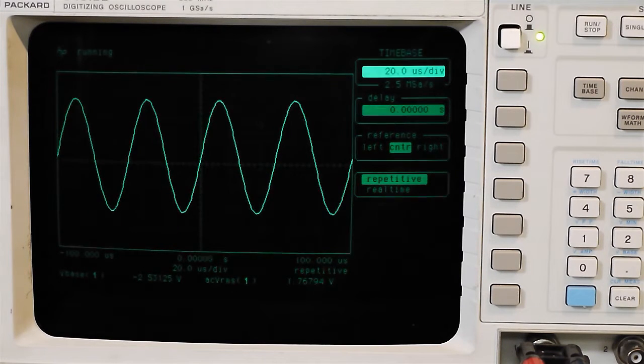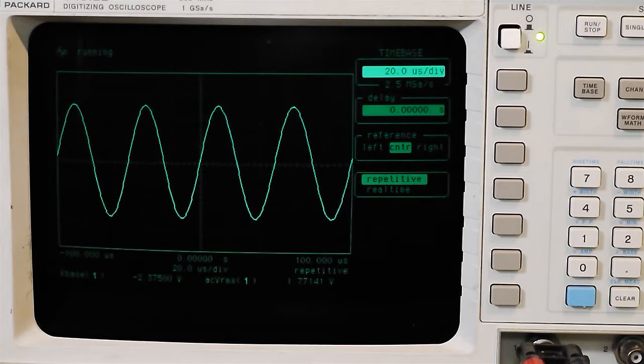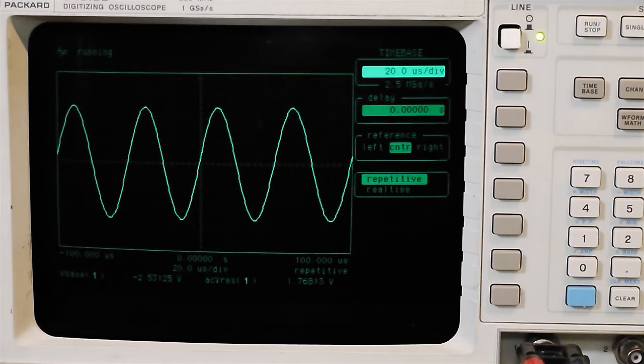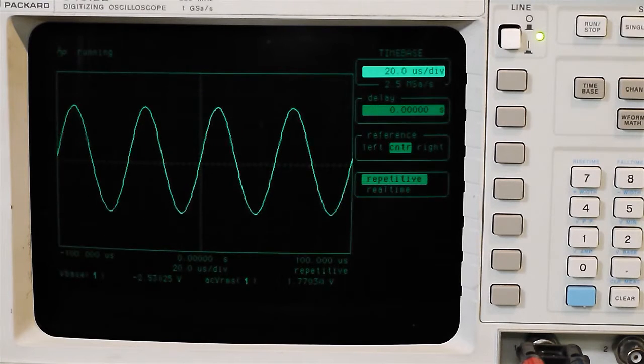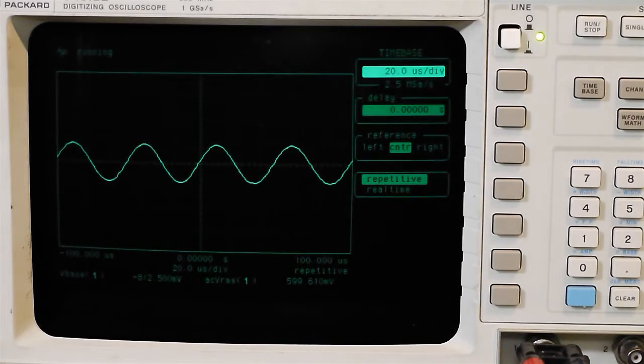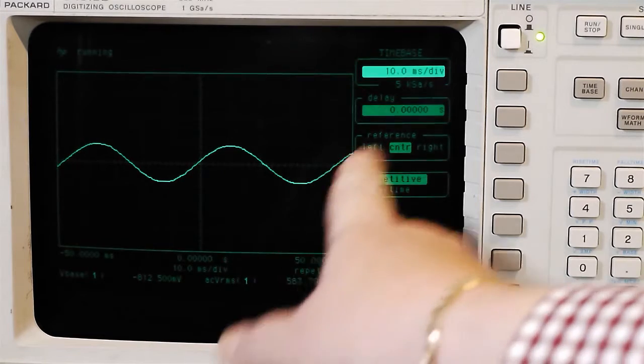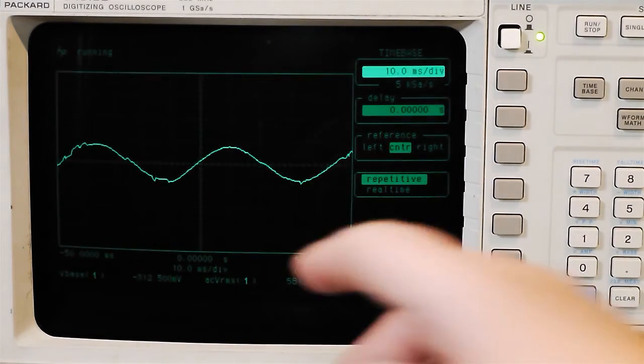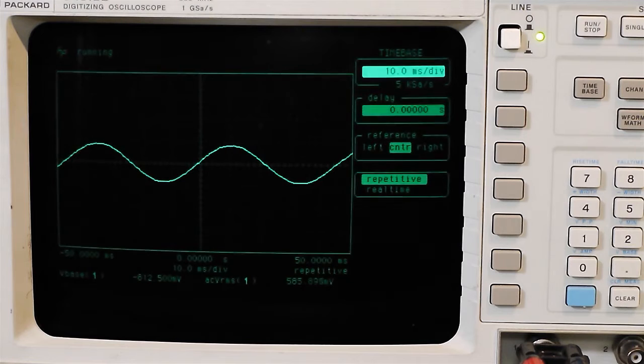A little bit of DC unsteadiness there, that's interesting. Don't know what's going on there. Maybe our DC servo is not quite keeping up, a bit of a worry. I've just changed the frequency to 20 Hertz and changed our time base to 10 milliseconds per division. I'm getting these occasional discontinuities in the signal. Not quite sure what's going on there, a little bit of a cause for concern.